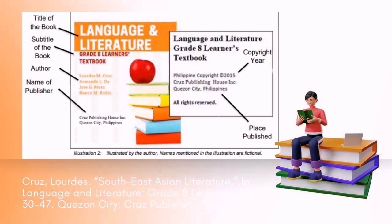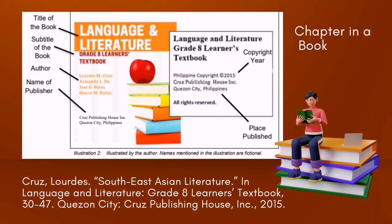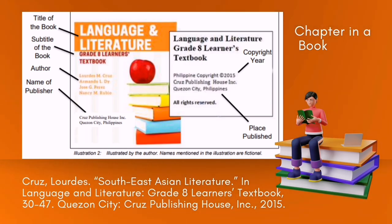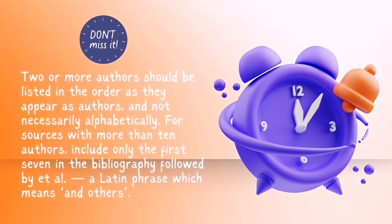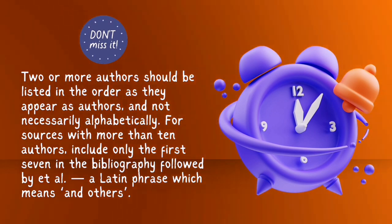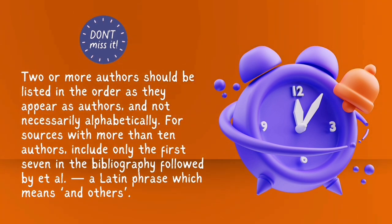Chapter in a book. Example: Cruz, Lord Esti. "Southeast Asian Literature." In Language and Literature: Grade 8 Learner's Textbook, pages 30 to 47. Quezon City: Cruz Publishing House, Inc. Tip: Two or more authors should be listed in the order as they appear as authors, and not necessarily alphabetically. For sources with more than ten authors, include only the first seven in the bibliography, followed by et al., a Latin phrase which means "and others."